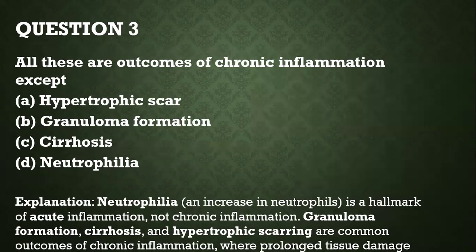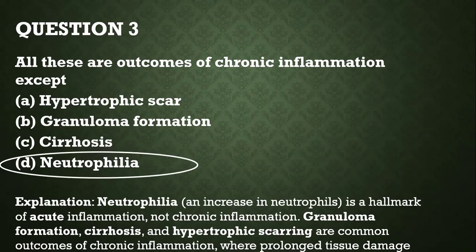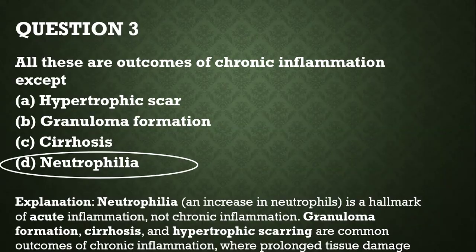Question number three: all of these are outcomes of chronic inflammation except neutrophilia. The other options — hypertrophic scar, granuloma formation, and cirrhosis — are correct outcomes. Neutrophilia is an increase in neutrophils and occurs in acute inflammation, not chronic inflammation. Granuloma formation, cirrhosis, and hypertrophic scarring are outcomes of chronic inflammation where you have prolonged tissue damage.